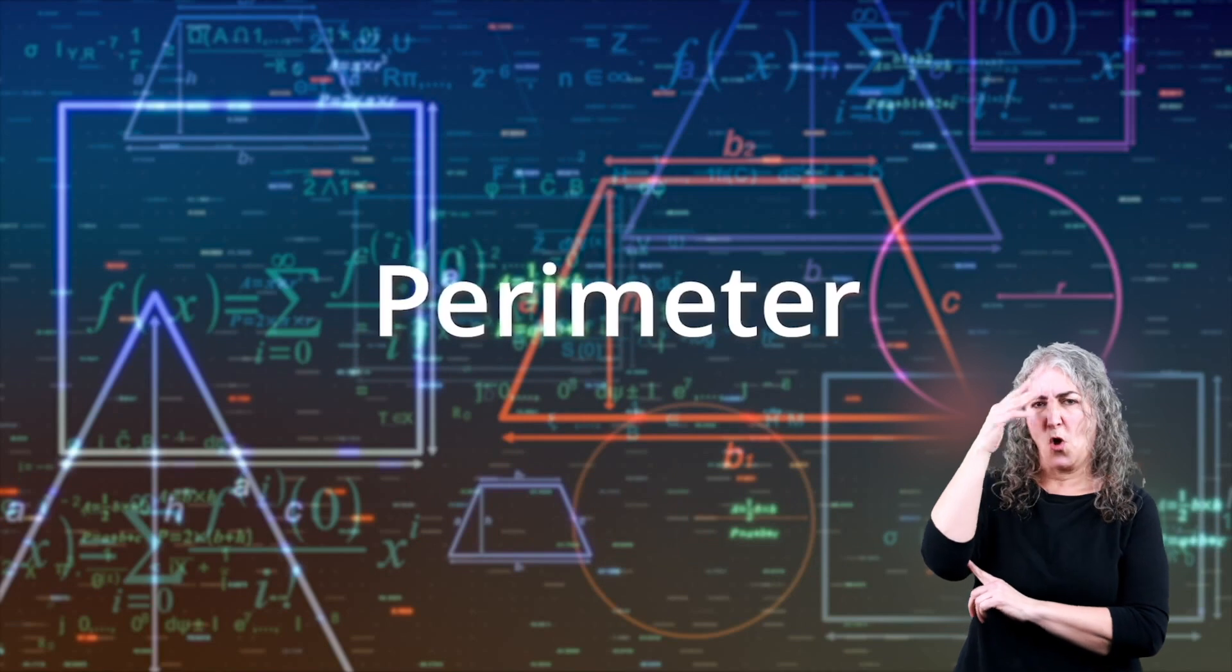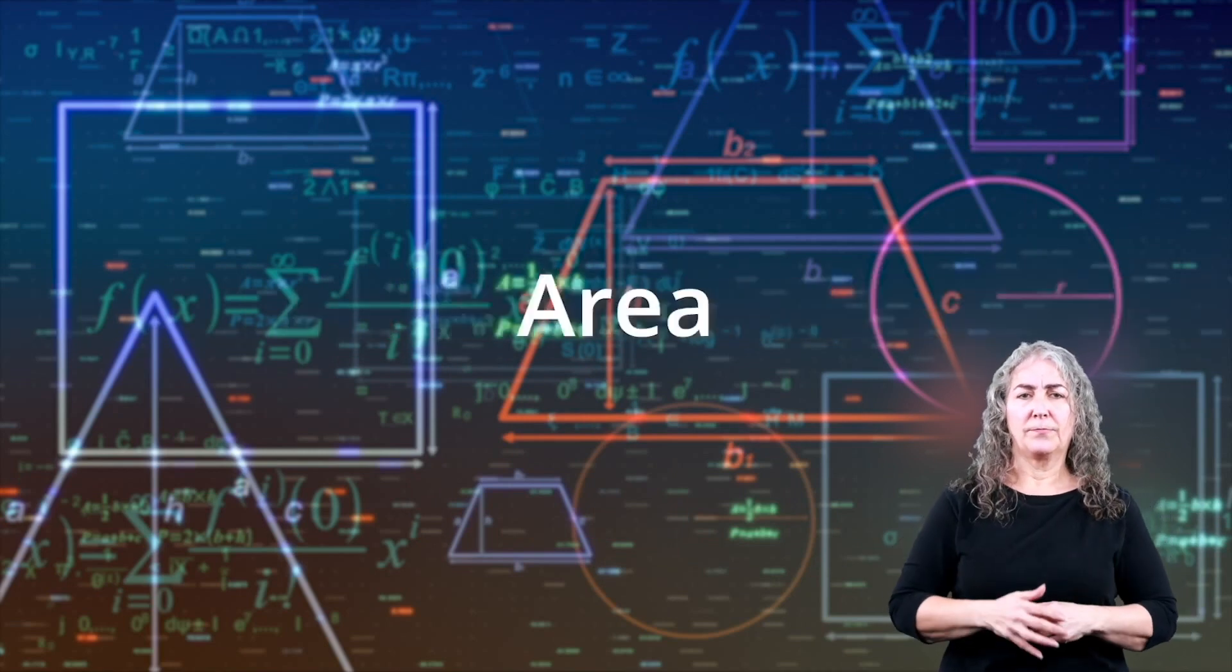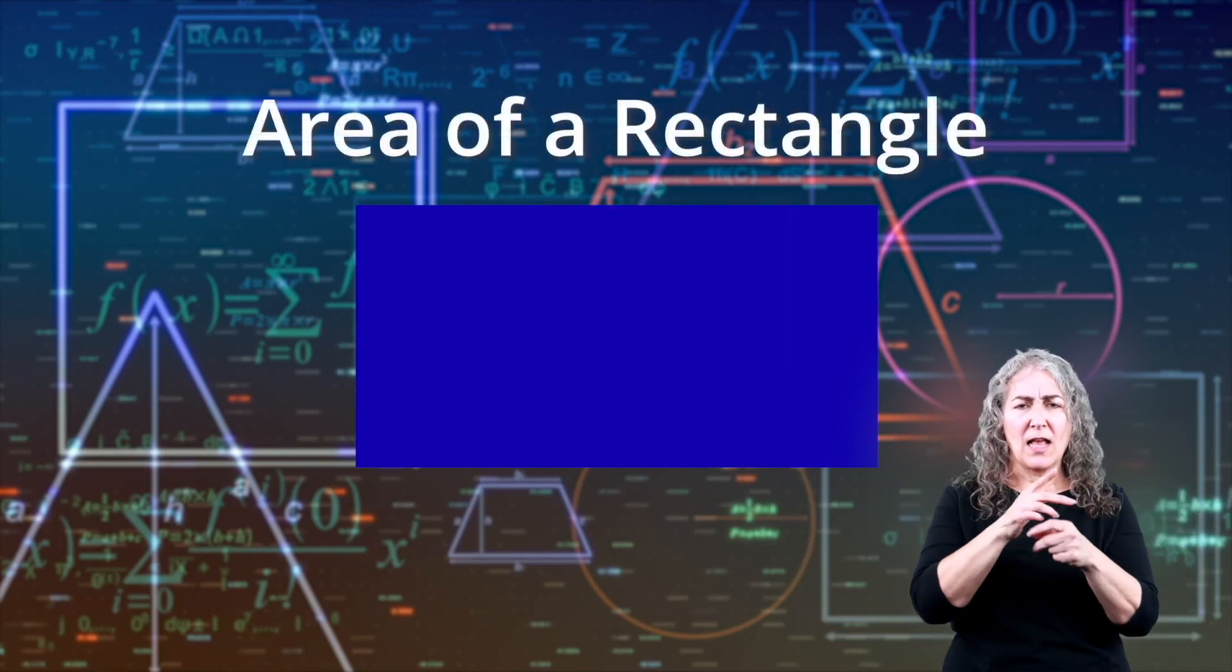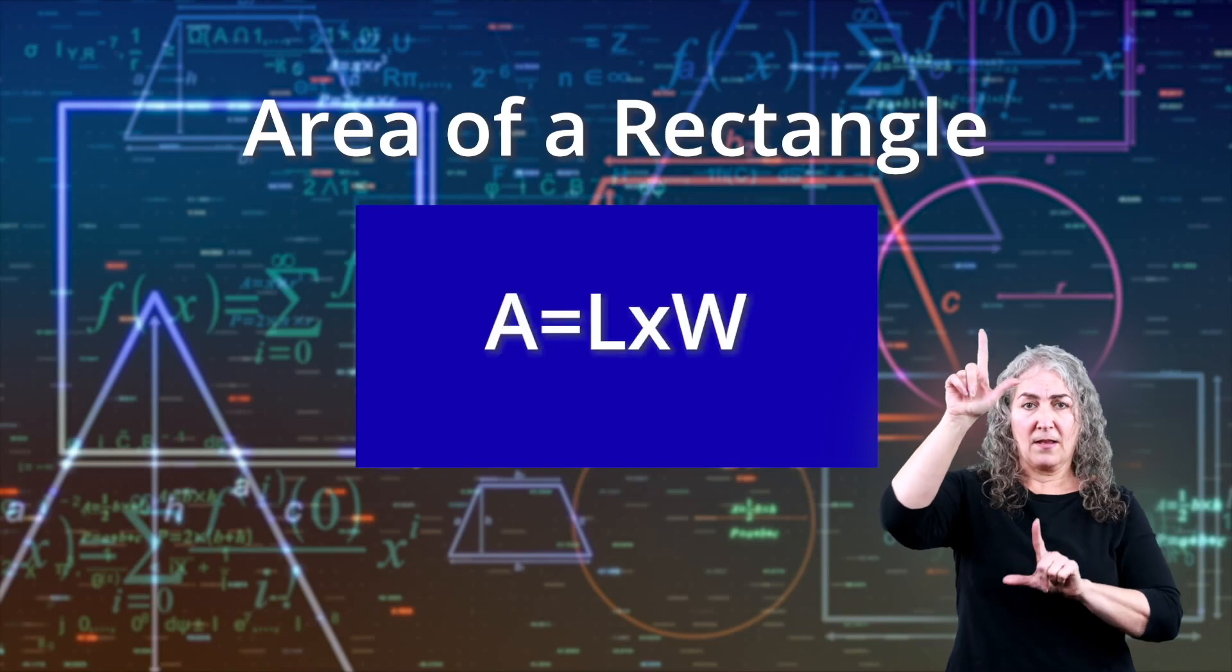Now that you know about perimeter, let's talk area. Remember, the area is the space inside the rectangle. All you have to do to calculate area is multiply the length times the width.